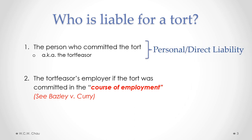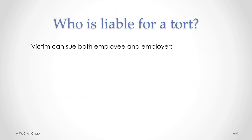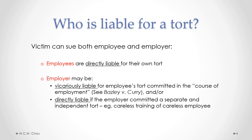Liability of the employer for a tort committed by an employee is called vicarious liability. The victim of a tort can sue both the employee who committed the tort and the employer. The employee would be directly liable, and the employer may be vicariously liable for the employee's tort committed in the course of employment. The employer could also be directly liable if it committed its own tort — for example, if they were careless in training the employee, and that careless training caused the employee to commit the tort and cause damage.